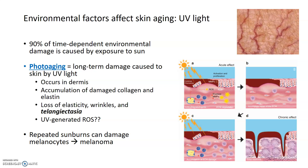One very important thing to realize about aging and age-related changes to the skin is that it's highly affected by the environment, because the skin is so exposed to the environment — it's on the outside of the body dealing with different environmental factors all the time. The biggest environmental contributor to aging of the skin is UV light. In fact, 90% of all time-dependent environmental damage to the skin is caused by exposure to the sun or UV light. This long-term damage caused by UV light is known as photoaging — 'photo' meaning light — a type of aging caused specifically by UV light from the sun.